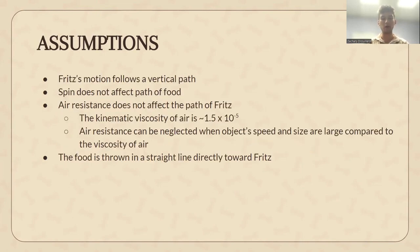In order to know what variables and rates of change would need to be considered for our model, we began by making the following assumptions. First is that Fritz's motion allows a vertical path. In the video provided, the dog's motion as he jumps for the food is almost entirely vertical, allowing us to neglect changes in horizontal position. We also assume that the effect of spin on the food's motion is small enough to be reasonably neglected. Air resistance is also negligible for objects whose speed and size are relatively large compared to the density of air, allowing us to model Fritz's motion without air resistance. Finally, based on the video, we assume that the food is thrown directly in Fritz's direction.